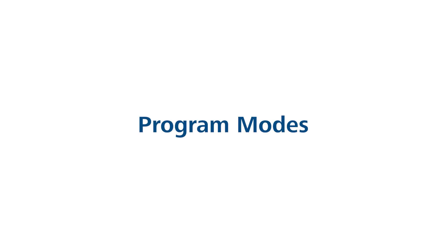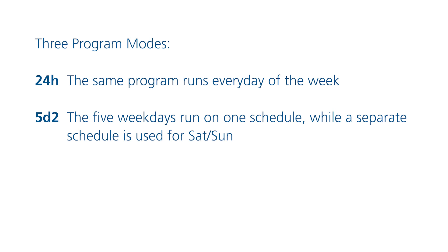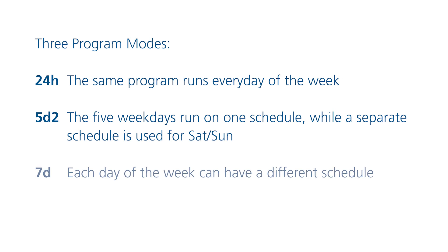There are three different ways to program the controller. 24H: the same program runs every day of the week. 5D2: the five weekdays run on one schedule while a separate schedule is used for Saturday and Sunday. 7D: each day of the week can have a different schedule. The factory default setting is 5D2.